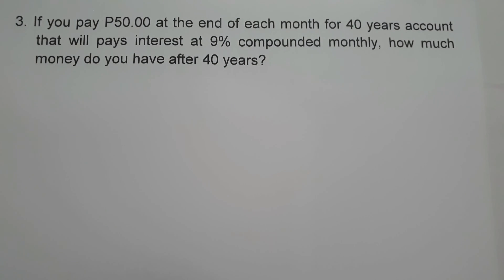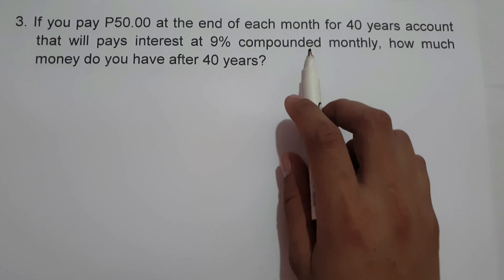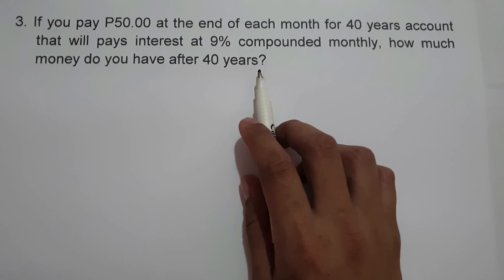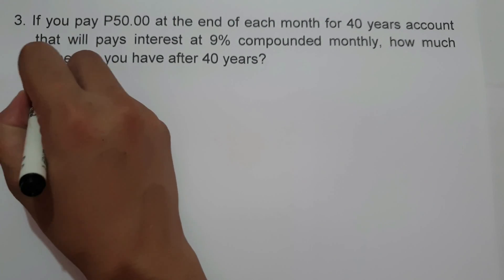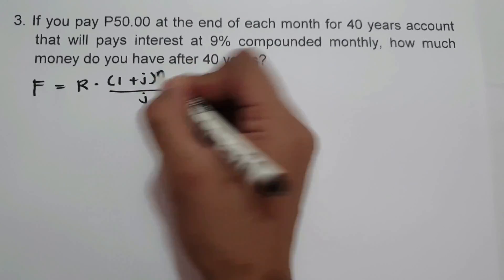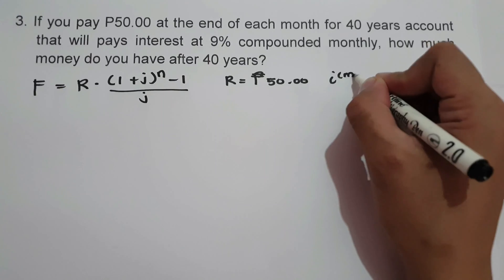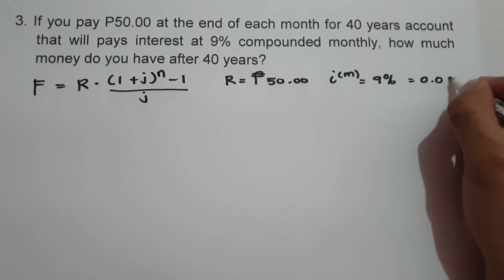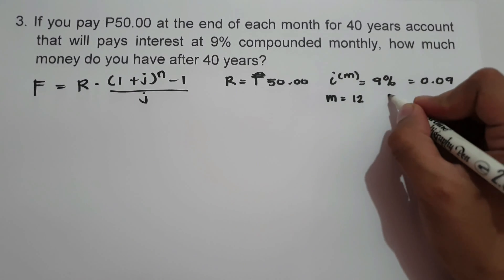For our last example: If you pay 50 pesos at the end of each month for 40 years into an account that pays interest at 9% compounded monthly, how much money do you have after 40 years? Since the payment is made at the end of each month and the payment interval is the same as the interest period (monthly), this is a simple ordinary annuity. The given values are: R equals 50 pesos; annual rate is 9% or 0.09; m equals 12 (monthly); and time equals 40 years.